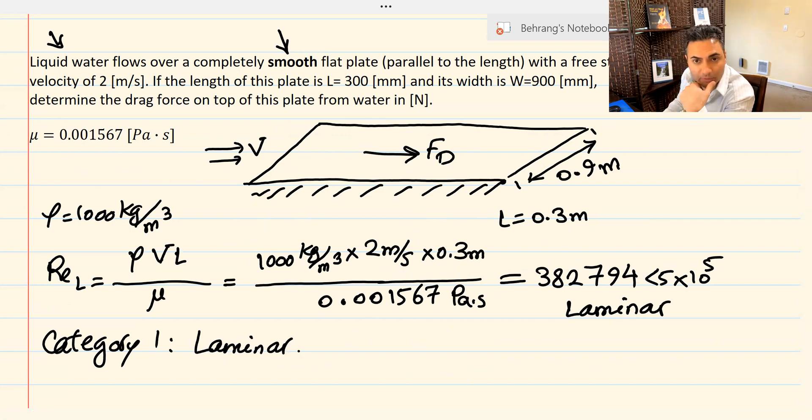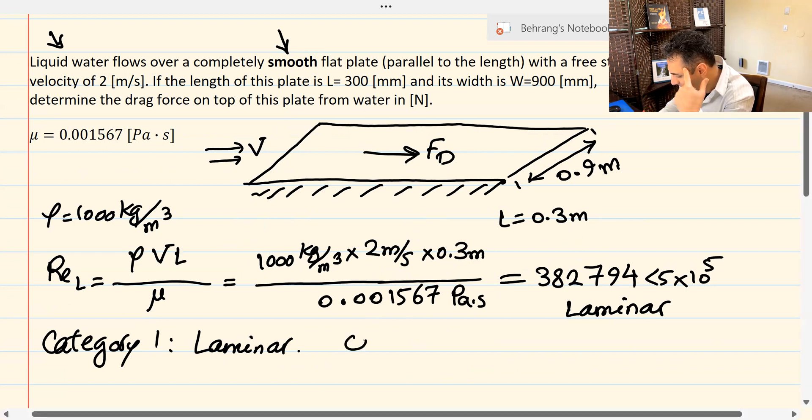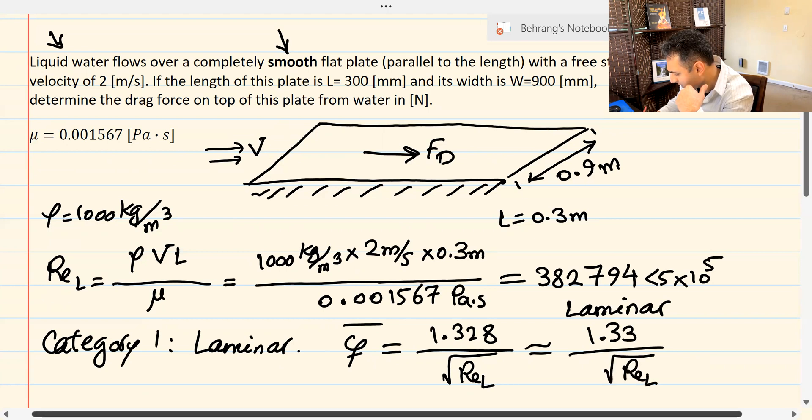You can go back to that video I mentioned. We can find the link in the description and find the value of average, the equation for the average friction coefficient for laminar flow category one. Category one for laminar flow, the average friction coefficient is 1.328 over the square root of Reynolds L. And a lot of books just show this by 1.33 over the square root of Reynolds L like this.